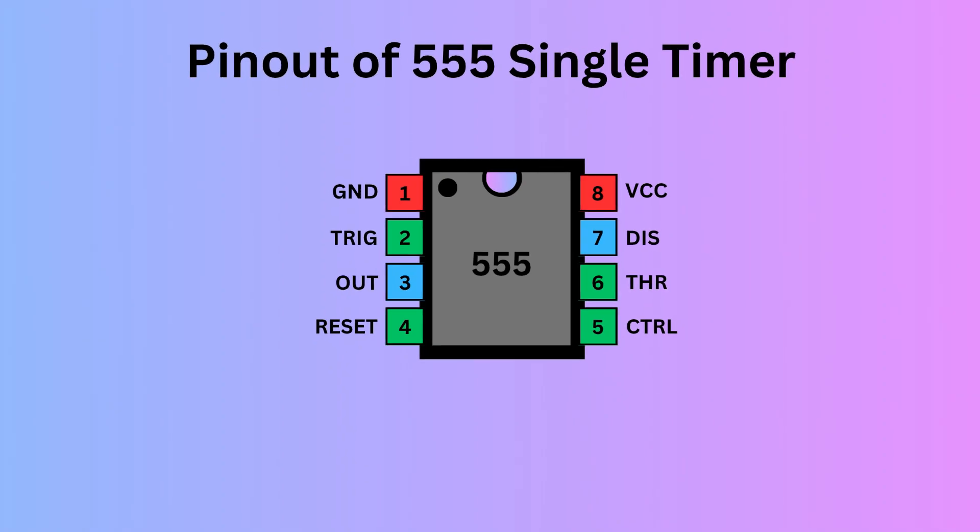The 555 timer IC comes with 8 pins. There is a notch or a dot on the chip's body. Pin 1, located at the top left, serves as the ground or ground supply. Pin 2 is trigger. It is used to start the timing interval in both monostable and astable modes.